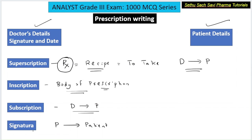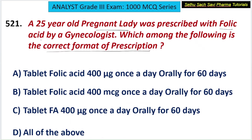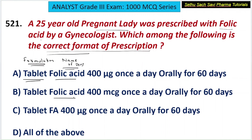Superscription, inscription, subscription, signature — these terms you need to remember. Now, in the inscription (the body of the prescription), the formulation name should be there — whether it is a tablet or a capsule. The actual name of the drug should be given in full, not in an abbreviated form. In choice A and B, 'folic acid' is written in full. But in choice C, it is given as 'FA' — an abbreviation. That is not the correct format of prescription.